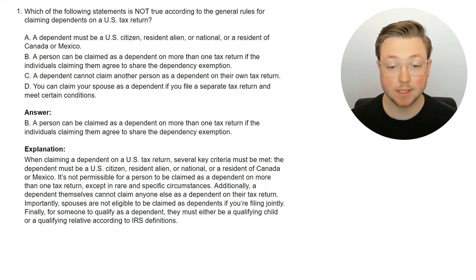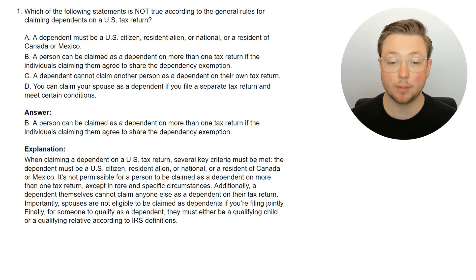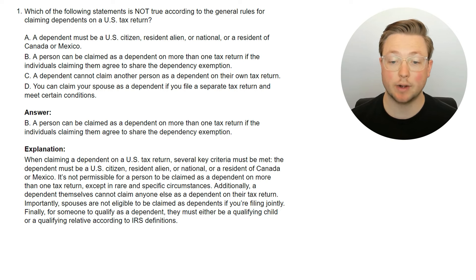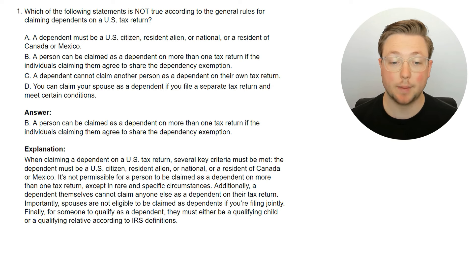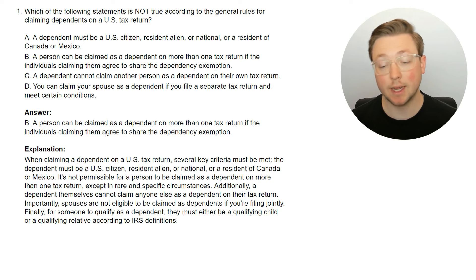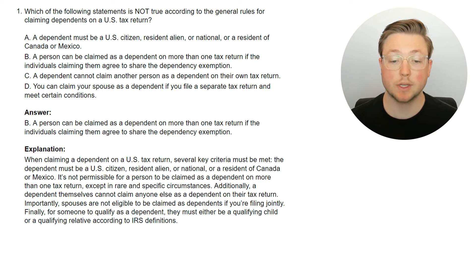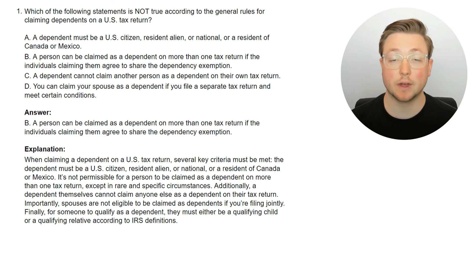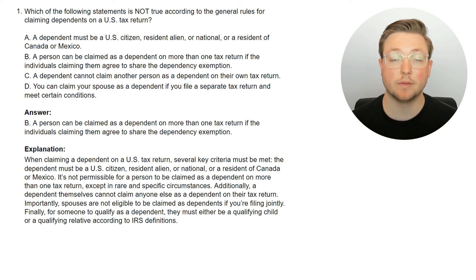The dependent must be a U.S. citizen, resident alien, or national, or a resident of Canada or Mexico. It's not permissible for a person to be claimed as a dependent on more than one tax return, except in rare and specific circumstances. Additionally, a dependent themselves cannot claim anyone else as a dependent on their tax return. Spouses are not eligible to be claimed as dependents if you're filing jointly — if you file separately, sometimes you can claim a spouse as a dependent, but if you're married filing jointly, you can't claim your spouse as a dependent.